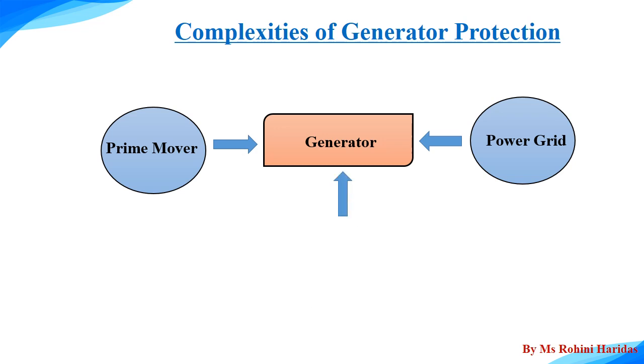Yet on another side, it is connected to the DC excitation system. You can see that the generator is not a single equipment. The protection of the generator should be coordinated with the associated equipments. It is obvious that the generator protection is very complex as compared to the protection of the other elements in the power system.